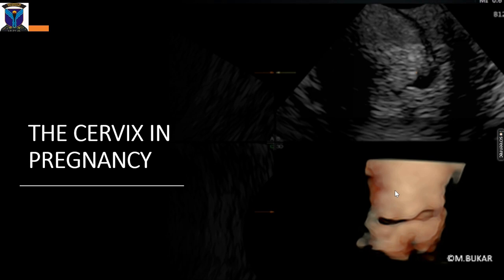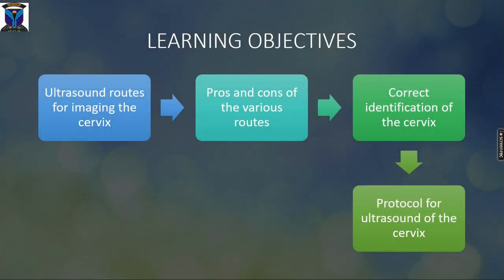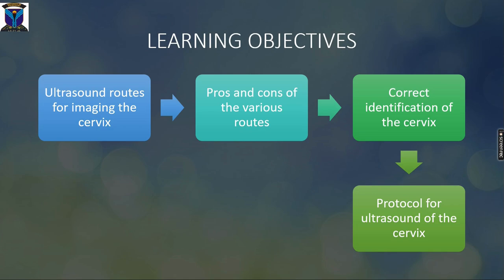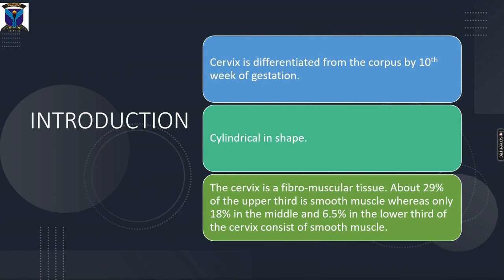The cervix in pregnancy. The learning objectives are: to know the different ultrasound routes for imaging the cervix, to know the pros and cons of the various methods, to understand how to correctly identify the cervix, and to know the technique for ultrasound examination of the cervix.